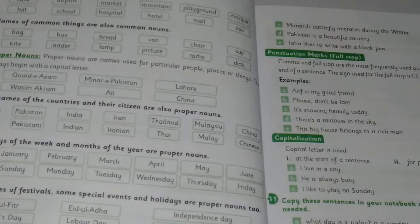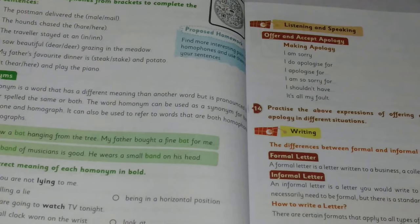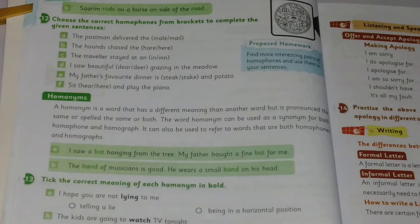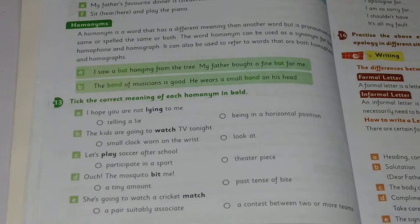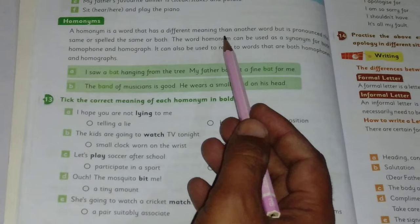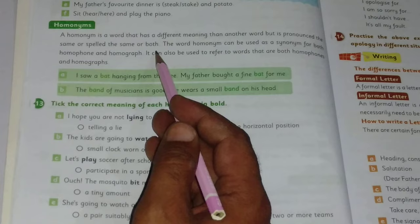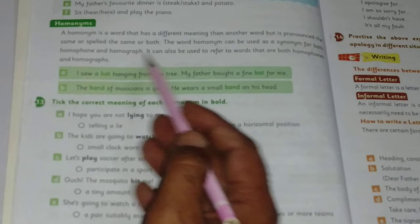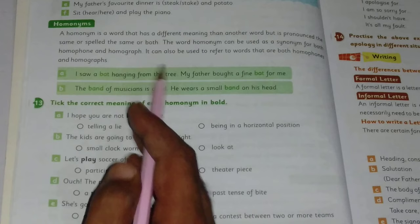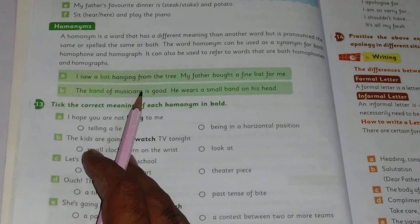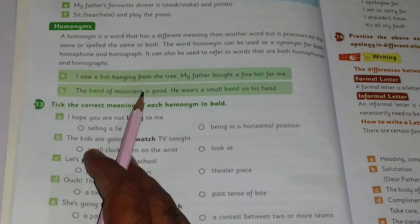Here is another question added in this new chapter: Homonyms. A homonym is a word that has a different meaning than another word but is pronounced the same or spelled the same, or both. The word homonym can be used as a synonym for both homophone and homograph. It can also be used to refer to words that are both homophones and homographs. A homonym is a word that has a different meaning but the spelling and pronunciation are the same.